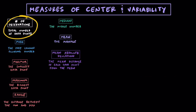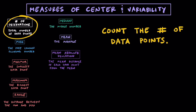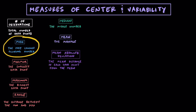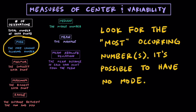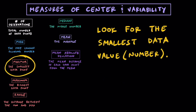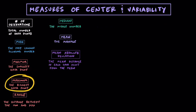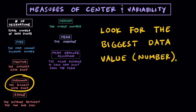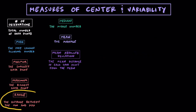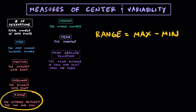To find the number of observations, you just have to count the number of data points you have. To find the mode, we're going to look for the most occurring number or numbers, and it's possible to have no mode if they're all tied. Finding the minimum requires minimal work — you just have to look for the smallest data value. Similarly, to find the maximum, you're just going to have to look for the biggest value. The range is the first one where we need to calculate: we take the maximum value and subtract the minimum value from it. A large range tells us the data is really spread out, while a small range tells us the data is very concentrated or close together.